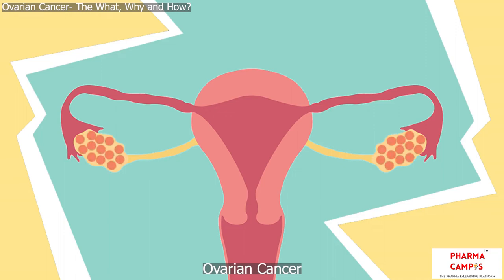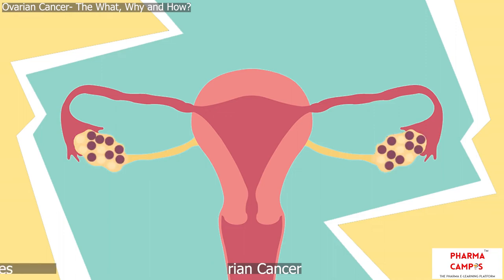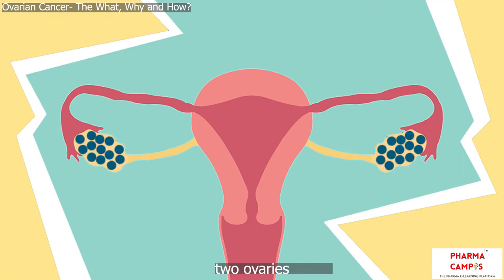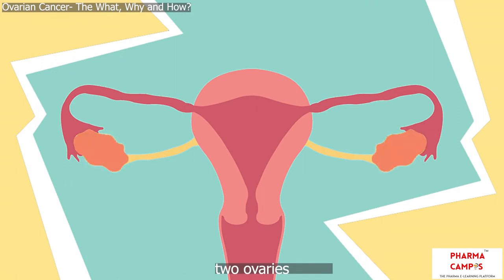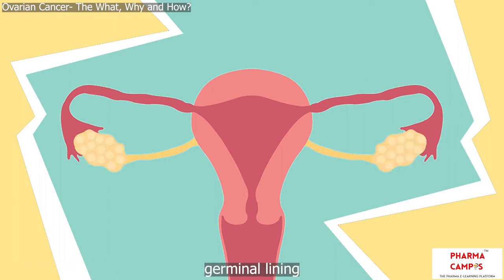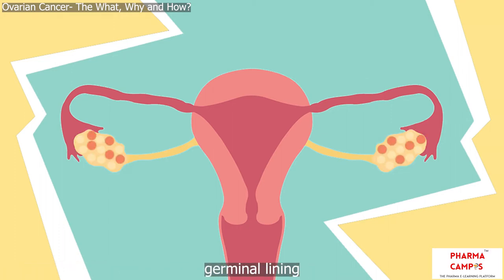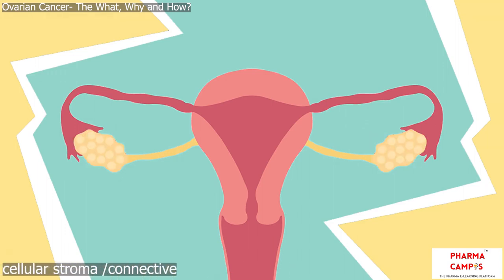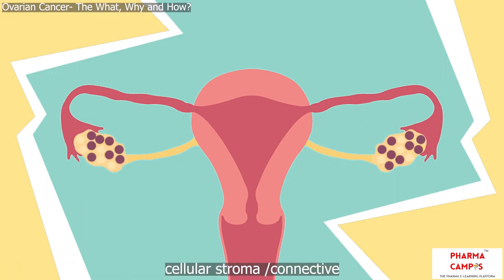Ovarian Cancer: The What, Why and How. Females have two ovaries situated in the pelvis, which are the primary sites of production of female gametes known as ova or eggs. The ovaries have the germinal lining which gives rise to ovarian follicles containing the gametes. Besides, they have a cellular stroma — connective tissue which fills the substance of the ovary.